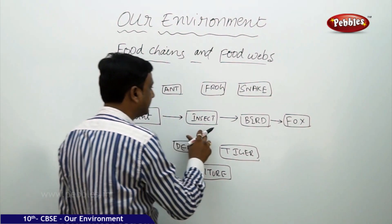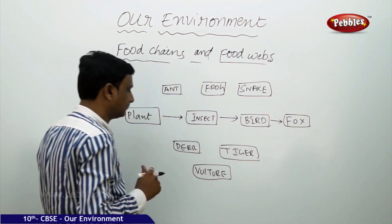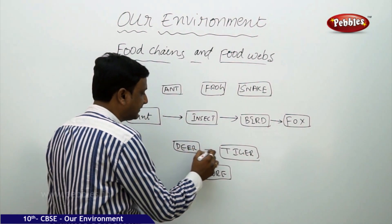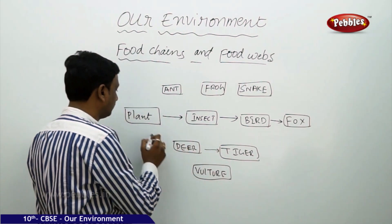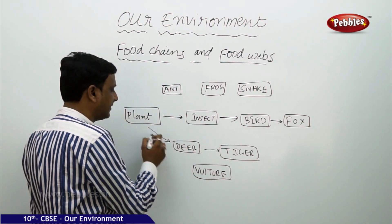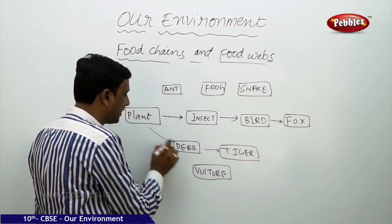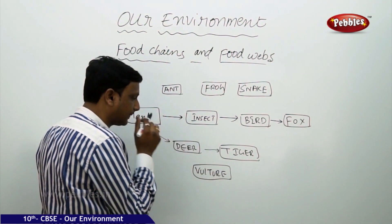The chain goes: plant, insect, bird, fox. Similarly, you see deer is eaten by tiger, and plant is eaten by deer. Here you can find another chain: plant, deer, tiger.